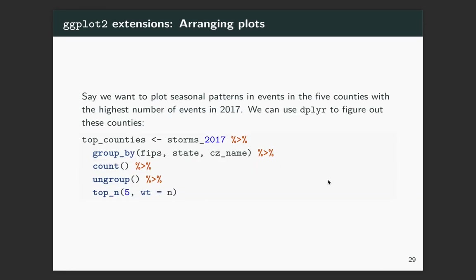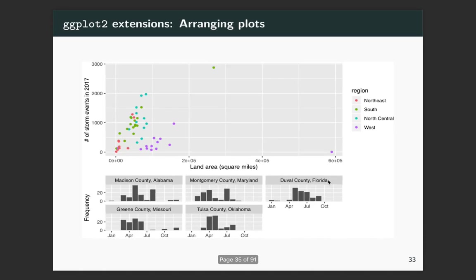Let's look at this — if we wanted to plot seasonal patterns and events in the five counties with the highest number of events and then add that on. Here's the final plot we're trying to create. On the same ggplot we have one scatter plot showing something for all states aggregated at the state level, and then down here we've taken the five counties with the highest number of events, labeled them with county name and state, and shown the number of events over the course of the year to look for seasonal patterns.